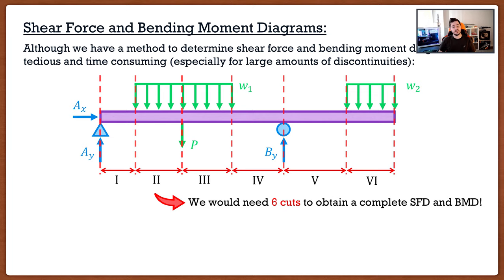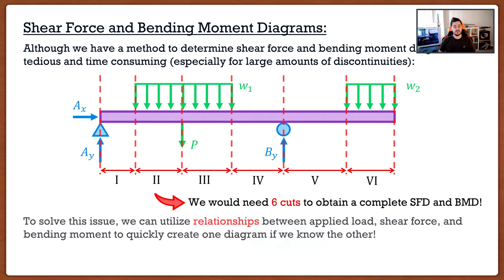For that beam, using the old method, we would need six cuts to obtain a complete shear force and bending moment diagram. You guys are probably saying 'Clayton, they'd never ask for a beam like this.' Well, I'm here to be the boogeyman of statics — this type of beam with this many loads is fair game for a final. Professors would never expect you to cut the beam six times because there's a nice relationship between shear, moment, and load that allows us to solve this very quickly. I'll take this exact beam as an example.